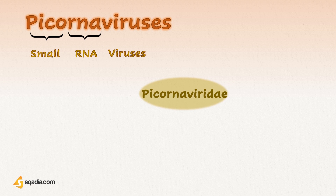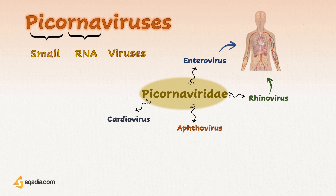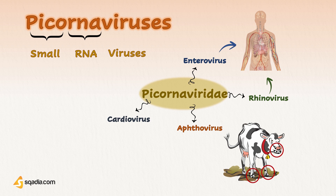The family consists of four genera: Enterovirus, Rhinovirus, Aphthovirus, and Cardiovirus, of which Enterovirus and Rhinovirus are pathogenic to man. Aphthovirus is responsible for foot-and-mouth disease in animals, and Cardiovirus can produce encephalomyelitis in mice. Our major concern here is Enterovirus and Rhinovirus.